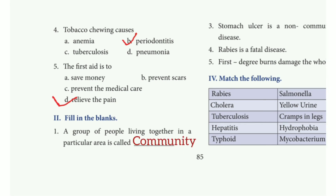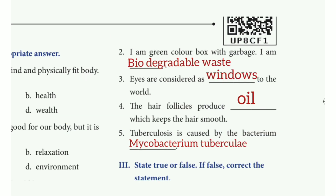Fill in the blanks. 1st one: A group of people living together in a particular area is called — the answer is community. 2nd one: I am a green color box — the answer is biodegradable waste. 3rd one: Eyes are considered as — the answer is windows to the world.